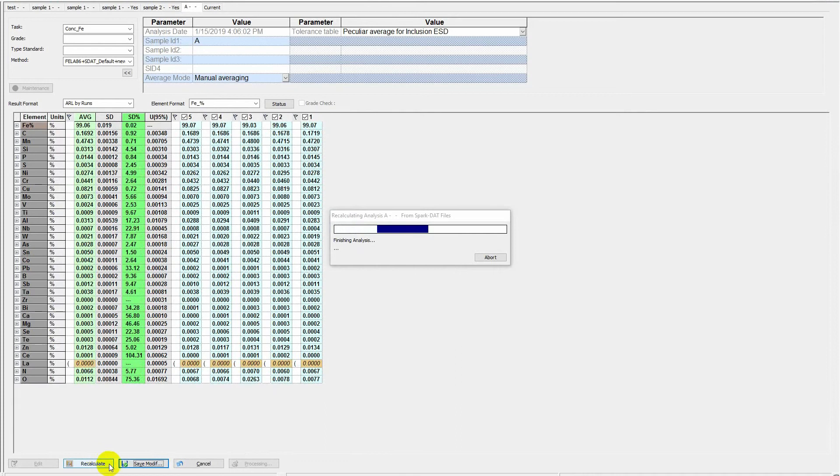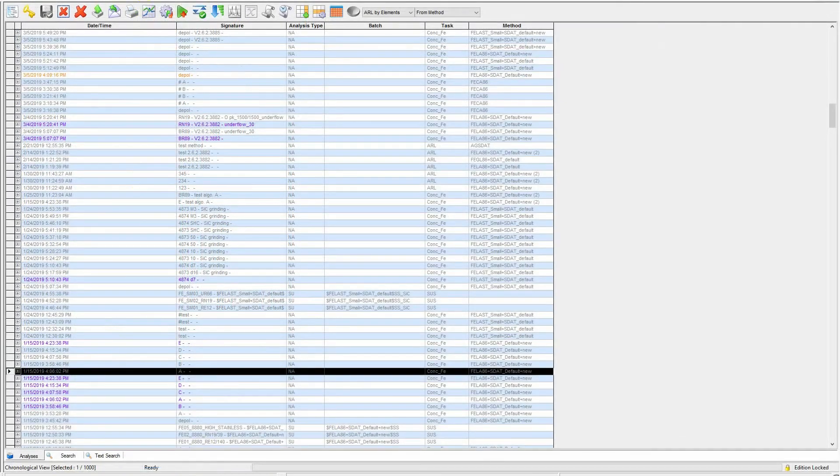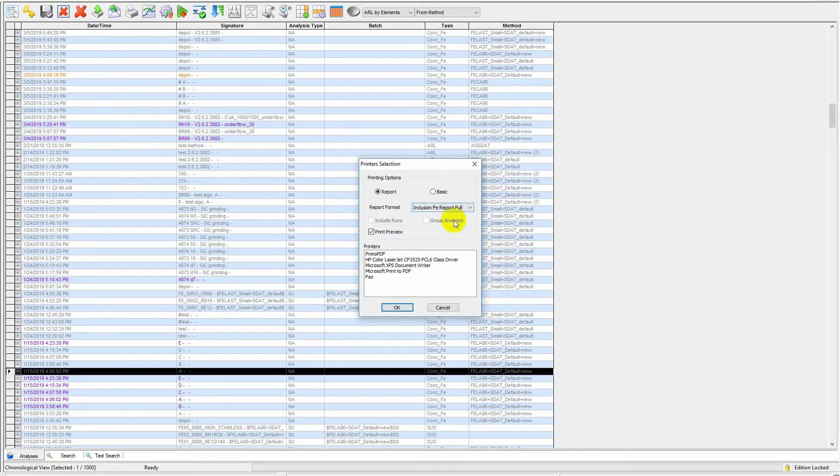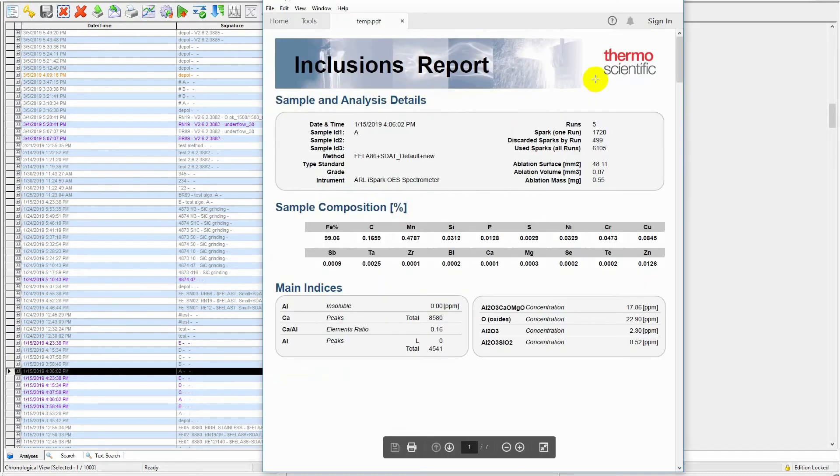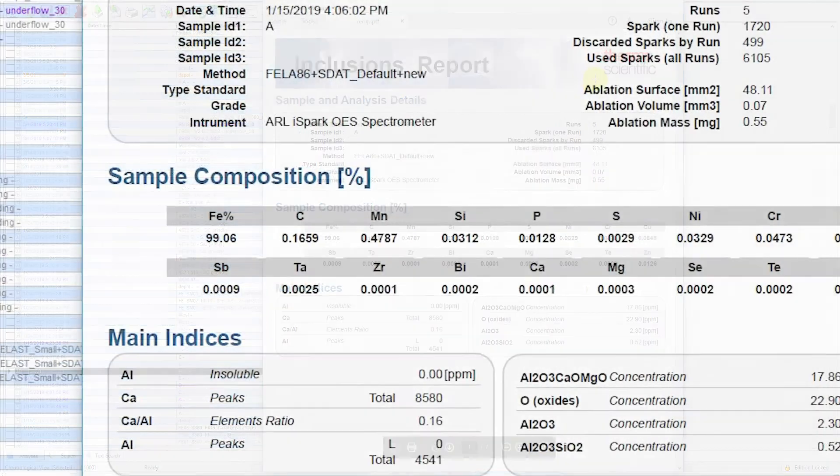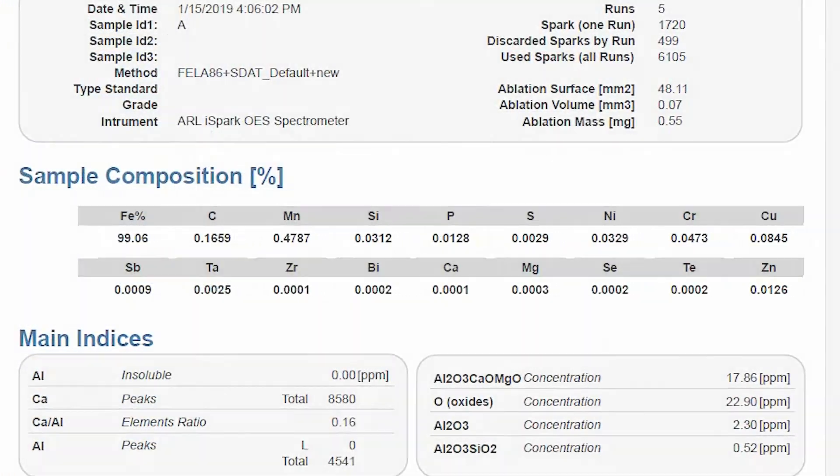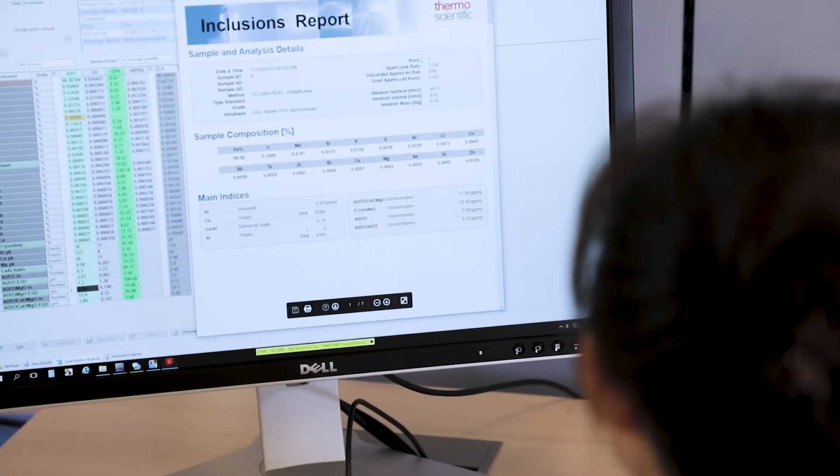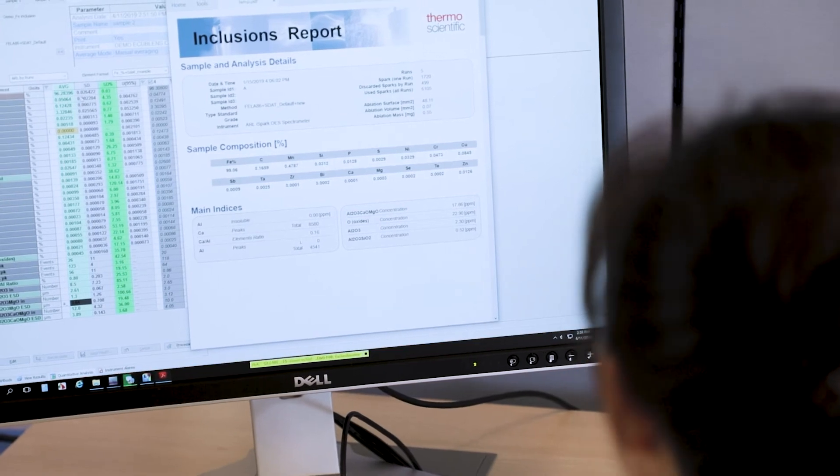Optional methods using the SparkDAT algorithms allow ultra-fast analysis of micro-inclusions, for example, aluminum oxides in steels or titanium diboride in aluminum. The inclusion analysis can be performed simultaneously with standard OES analysis without any change in operation or maintenance.